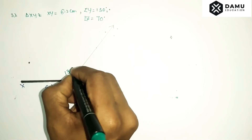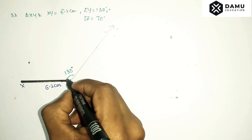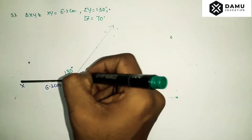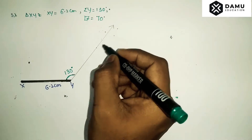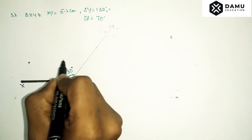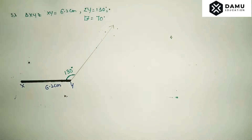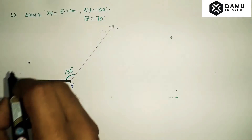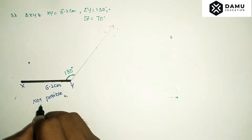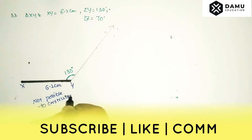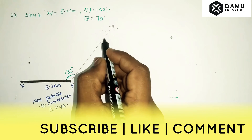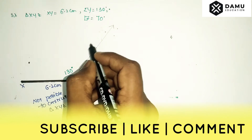This angle will be 130 degrees. For angle Z, they have given 70 degrees, but we don't know where Z will come on this line — we don't know which point it will fall on. We also don't have any information about angle X or the XZ measurement, so we cannot construct this triangle. It is not possible to construct triangle XYZ.